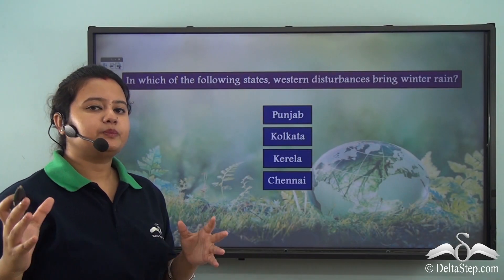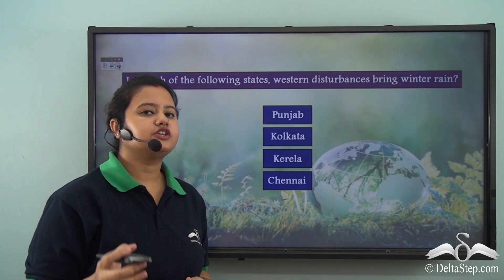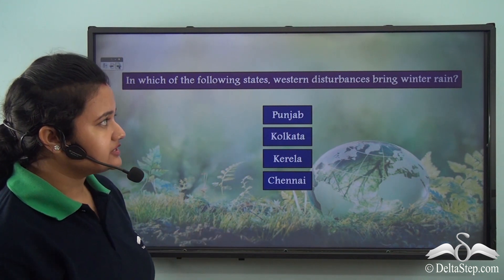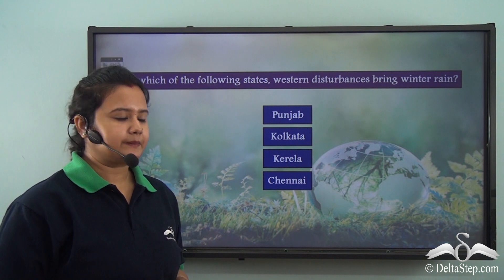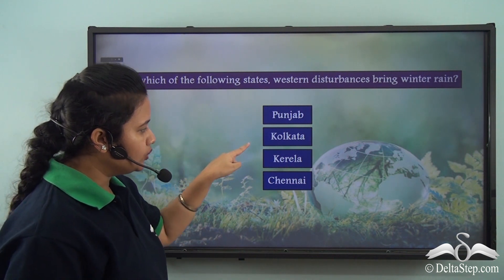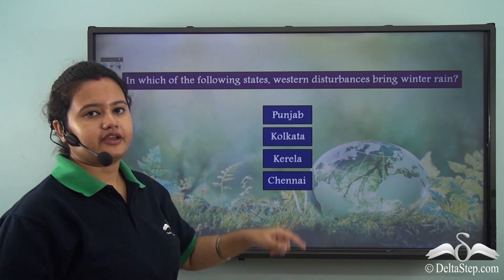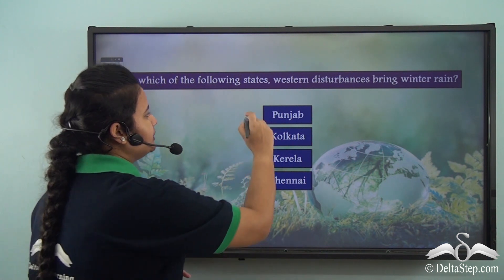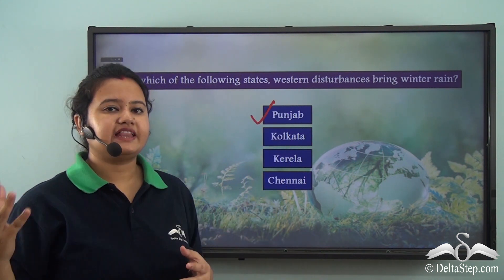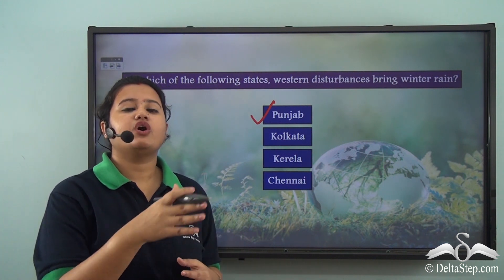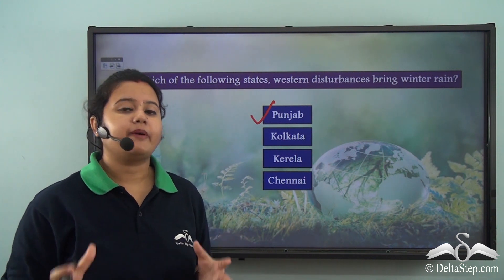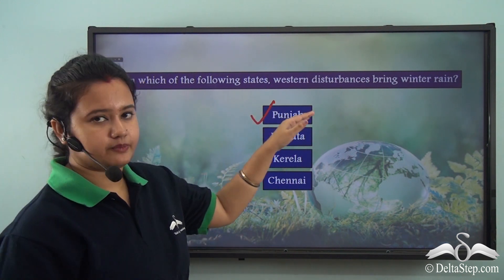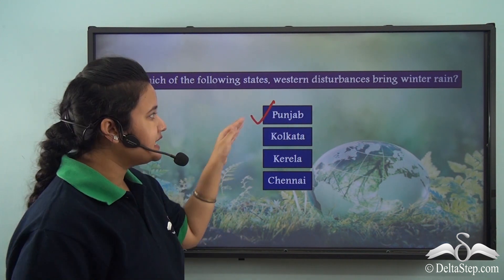Before we proceed, here is a question: In which of the following states do western disturbances bring winter rain? Is it Punjab, Kolkata, Kerala, or Chennai? The correct answer is Punjab. We just read that the northwestern states of India like Punjab and Haryana receive winter rain from western disturbances.